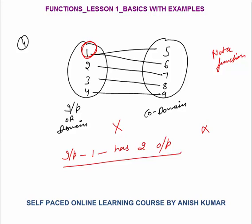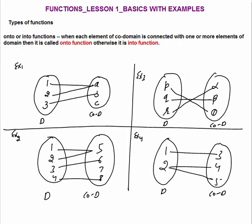Questions will come like this — a few graphs will be given to you, and you need to tell which of them are functions and which of them are not functions. Next is types of functions. Functions can be into or onto functions. When each element of the co-domain is connected with some one or more elements of the domain, then it is called an onto function. Otherwise, it is an into function.